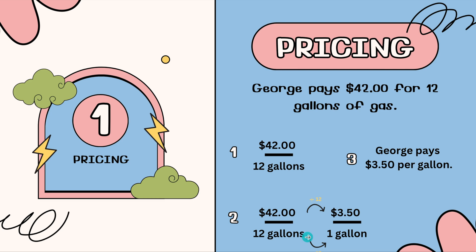I noticed that 12 divided by 12 gives me 1. And we know from our equivalent ratios, whatever I do to the bottom, I have to do to the top. So 42 divided by 12 gives me 3 dollars and 50 cents. This can be said as George pays 3 dollars and 50 cents per gallon. This line down here can be replaced with the word per.